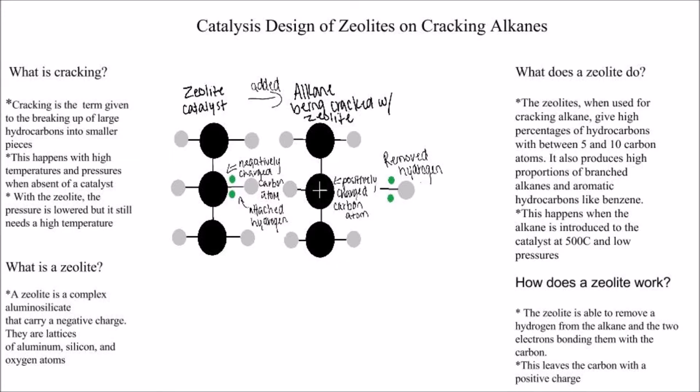The zeolite is able to remove a hydrogen from the alkane and the two electrons bonding them with the carbon. This leaves the carbon with a positive charge. In the picture, the zeolite catalyst and the alkane being introduced to the catalyst are shown.